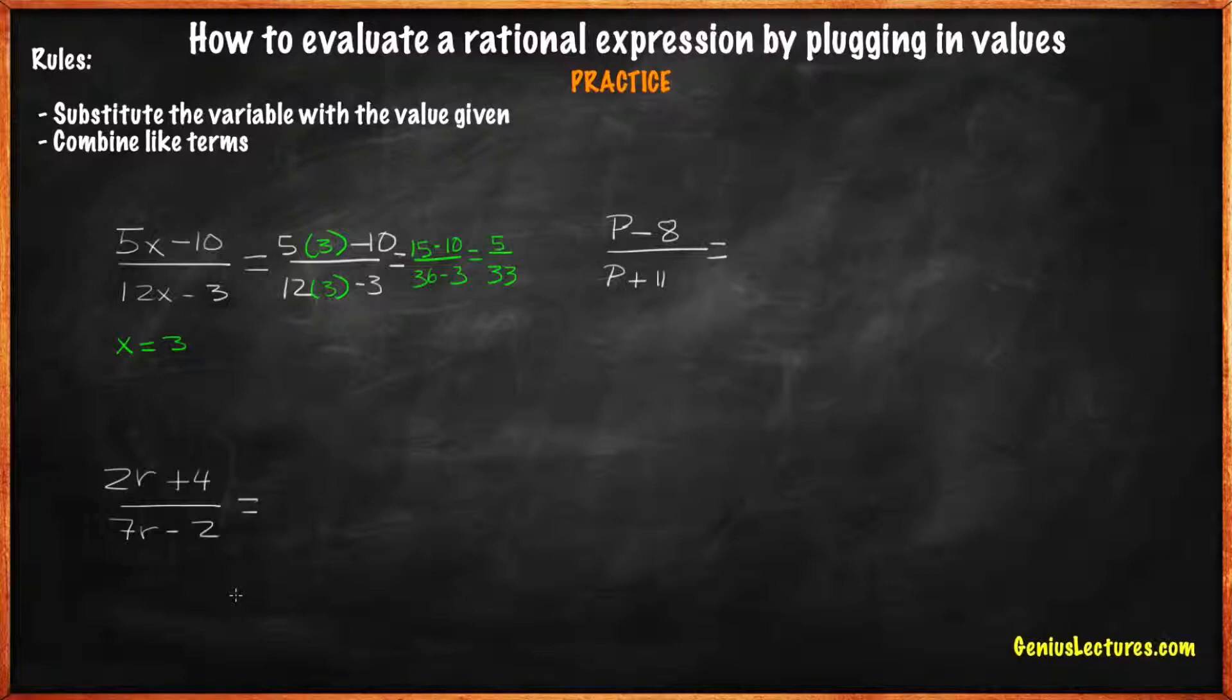Next, 2r plus 4 over 7r minus 2. Find the value when r equals 5. Here, we just need to replace r with 5. 2 times 5 plus 4 over 7 times 5 minus 2.